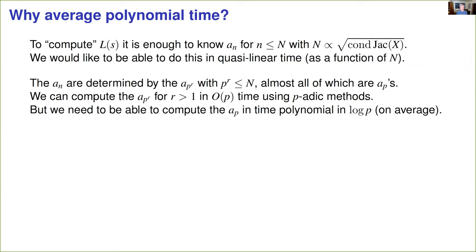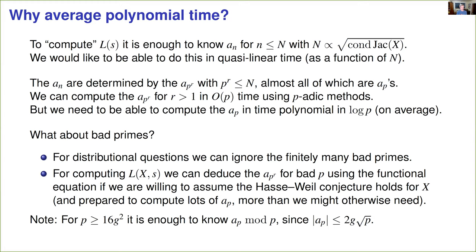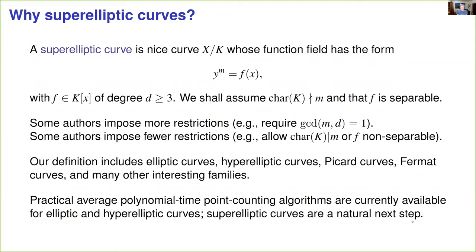Or said another way, we want an overall running time that has the shape n times some power of log n. Now you might ask about the bad primes. I haven't mentioned those. For distributional questions like Lang-Trotter and Sato-Tate, we can ignore them. There's only finitely many. When computing an L-function, we really do need to know what's happening at the bad primes. But if we're willing to assume that the Hasse-Weil conjecture holds for our L-function, that it has an analytic continuation and satisfies the expected functional equation, we can use our knowledge of the aps at good primes to deduce the missing Euler factors. Now this requires a lot of aps, perhaps more than we needed to just compute the analytic rank, but it still suffices to consider a bound proportional to the square root of the conductor of the Jacobian.